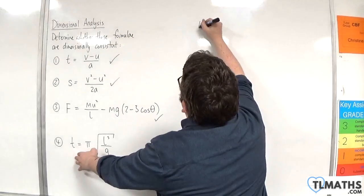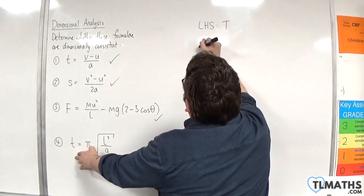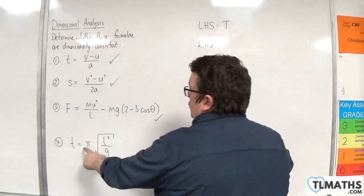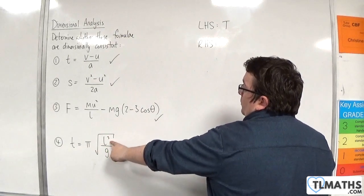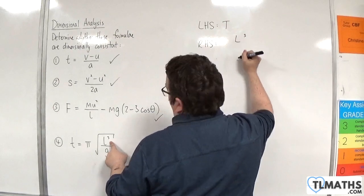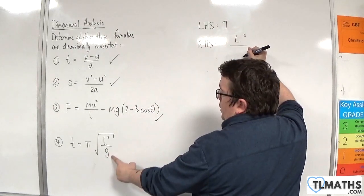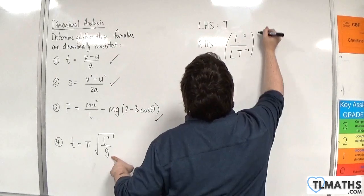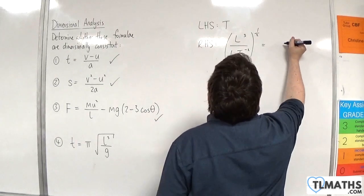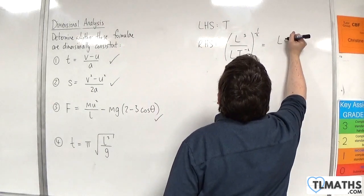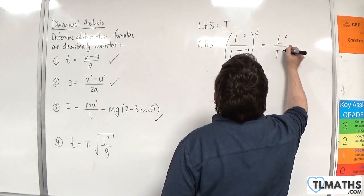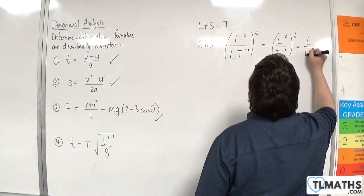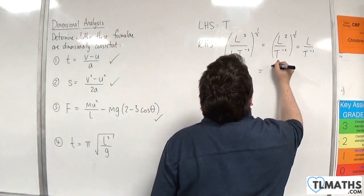For number 4, on the left-hand side we have time. On the right-hand side we've got π, which is dimensionless — so we can ignore that. But we then have the square root of L³ over g. Now g is an acceleration — metres per second per second — so LT⁻². That's square-rooted, so to the power of a half. So we have (L³ / LT⁻²)^(1/2) = (L² / T⁻²)^(1/2), which gives L over T⁻¹, the same as L·T.